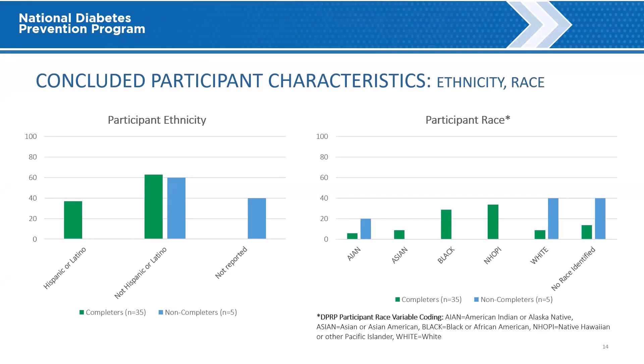Concluded Participant Characteristics: Ethnicity and Race. Participant ethnicity and race are displayed for completers and non-completers. Because participants can identify as multiple races, the percentages do not necessarily add up to 100.